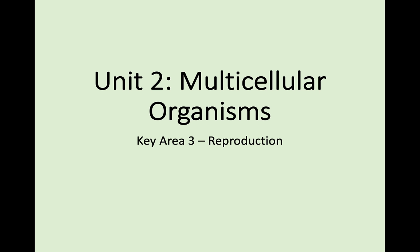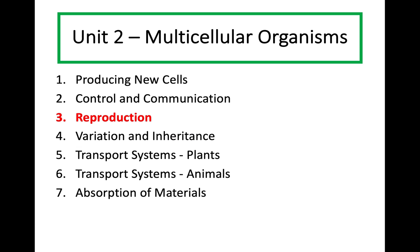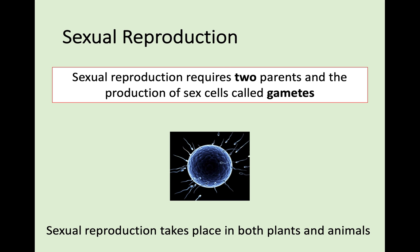Hi everyone and welcome back to National 5 Biology. Today we're continuing with Unit 2 Multicellular Organisms, moving on to Key Area 3 which is Reproduction. It's quite a short key area but there are a few things to go over. We're going to be looking at sexual reproduction, which requires two parents who produce sex cells called gametes. This takes place in both plants and animals, and we'll compare them later on.